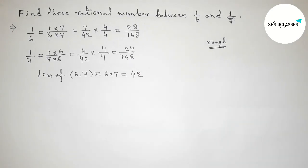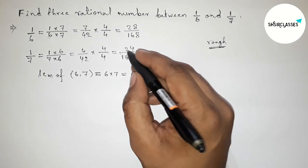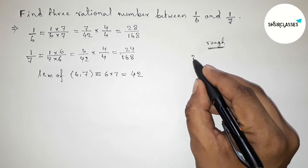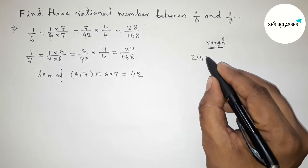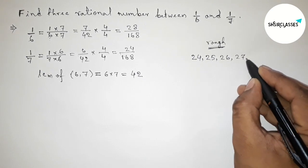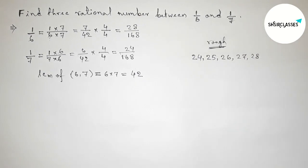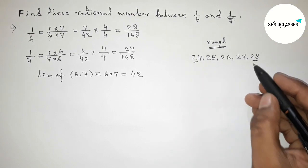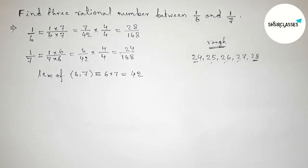Both the denominators are equal, so now between 24 to 28 we can get here 3 integers: 25, 26, 27. These are 3 integers. By these integers we can form rational numbers. First write down all the rational numbers.